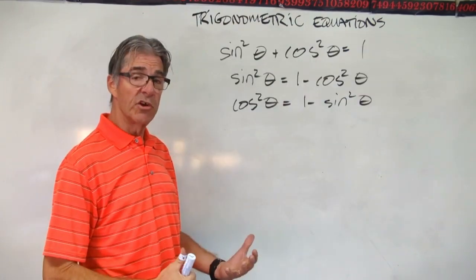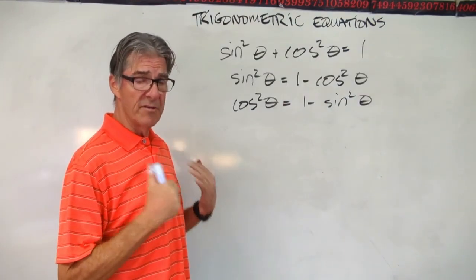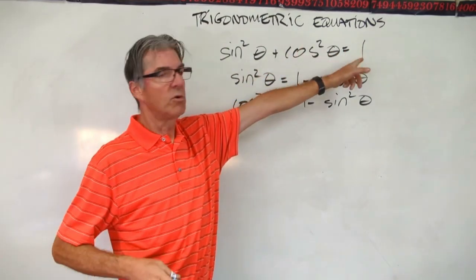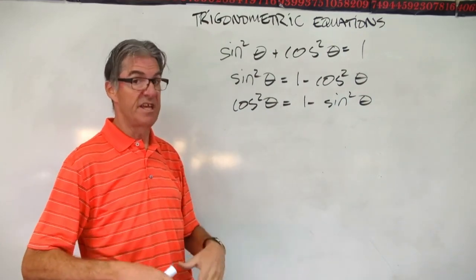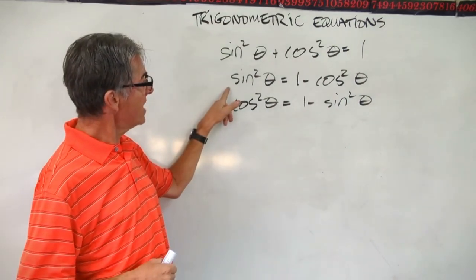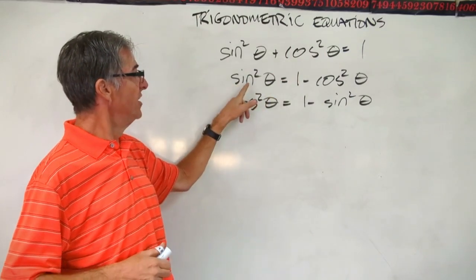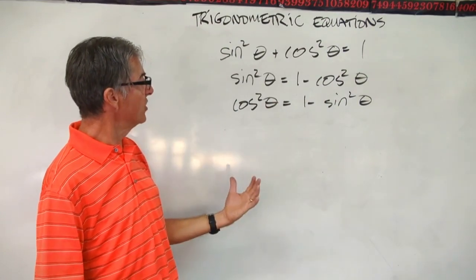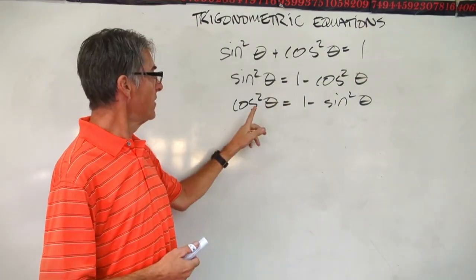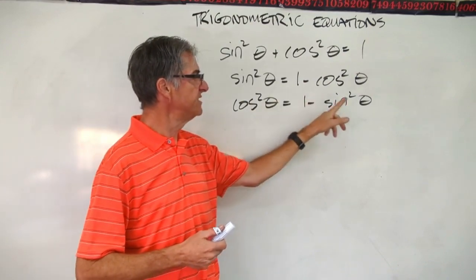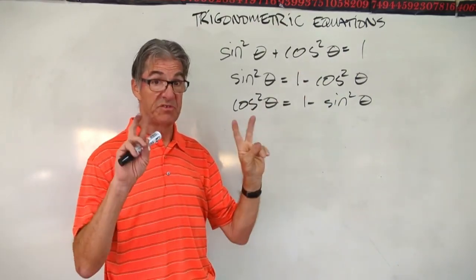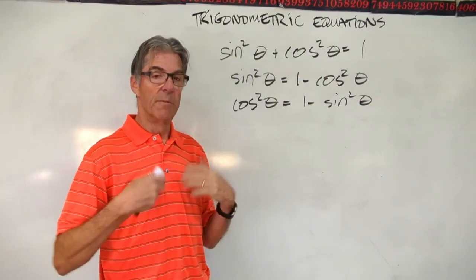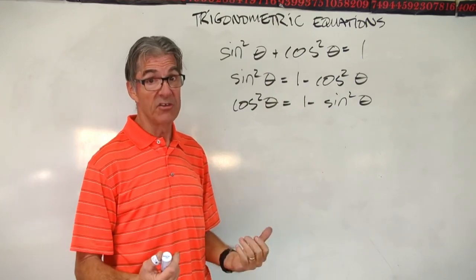I want to return to the trigonometric identity we covered in a previous lesson: sine squared theta plus cosine squared theta equals 1. There are two useful versions of this. Subtracting cosine squared theta from both sides gives sine squared theta equals 1 minus cosine squared theta. And subtracting sine squared theta gives cosine squared theta equals 1 minus sine squared theta. These sub-identities are useful substitutions when manipulating trigonometric equations with algebra.